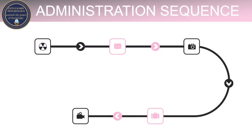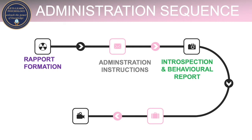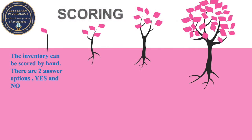The administration sequence is as follows: first, form a rapport with the subject; then give the instructions for how the test is to be done; then the subject does the test. While the subject is doing the test, observe and make a behavioral report. After the subject finishes, ask how they felt about the test — get an introspection report. Then score the filled-in inventory and make an interpretation of the scores.